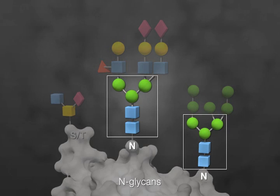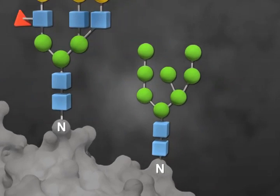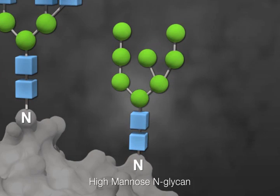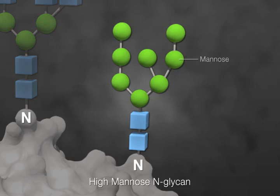N-glycans have a common biosynthesis pathway, which is reflected in the common structure of their core. N-glycans can be high mannose, which means all the component monosaccharides are mannose residues, with the exception of the two-core N-acetylglucosamine, or GlcNAc, residues.